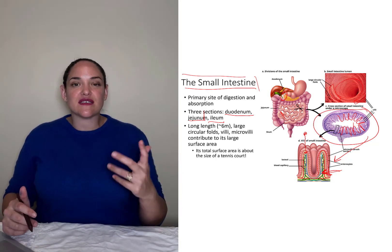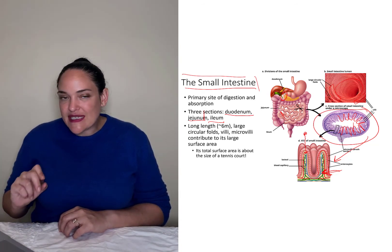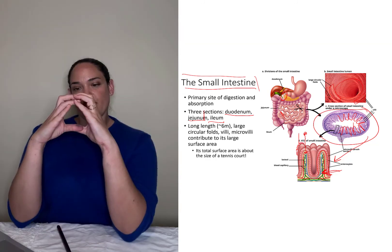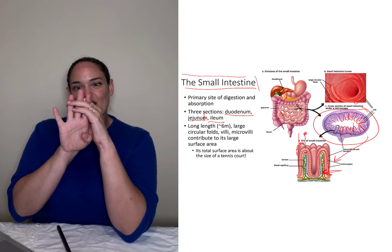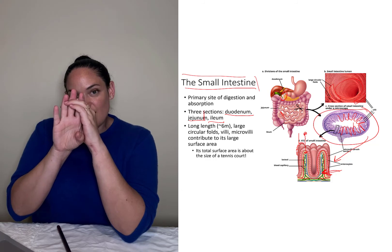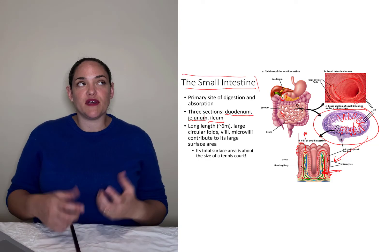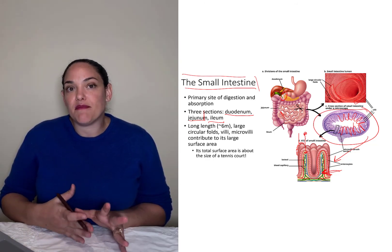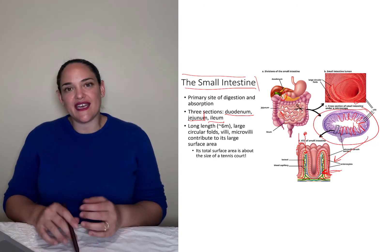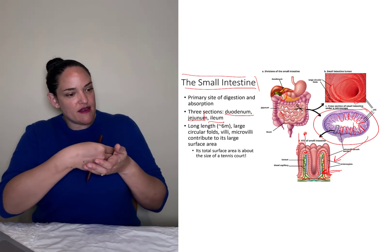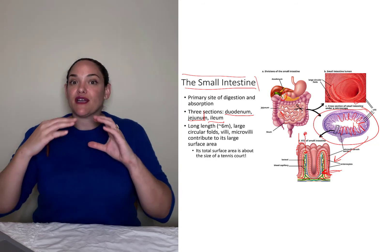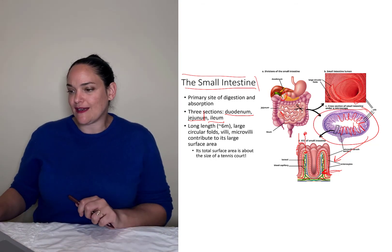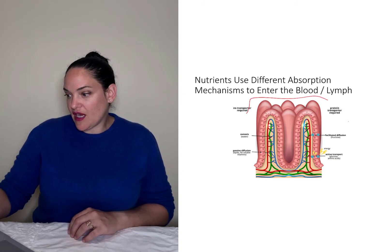In addition to villi and circular folds, something else increases the surface area of the small intestine: microvilli. Microvilli are tiny projections on each small intestine cell, visible only under high magnification. They not only increase surface area but also secrete some of the digestive enzymes of the small intestine. Under a light microscope, microvilli look fuzzy — like a brush stroke — so they are collectively called the brush border. Enzymes secreted by the microvilli are called brush border enzymes.